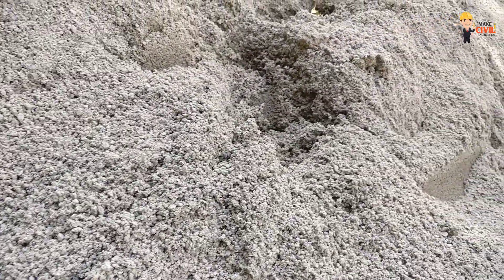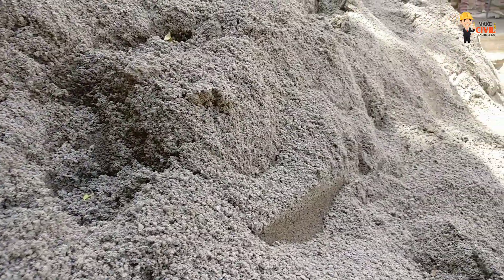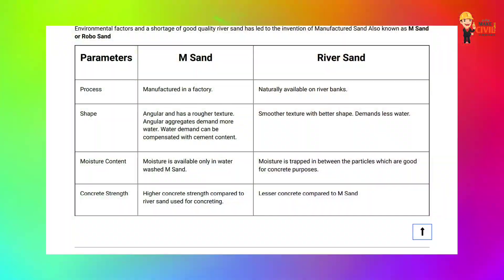How do you process M-Sand? M-Sand has a very rough texture. River sand, on the other hand, has a smooth texture, which makes them distinct from each other in terms of surface finish.